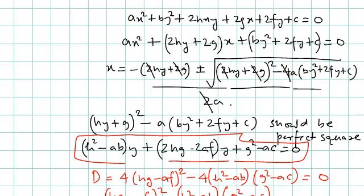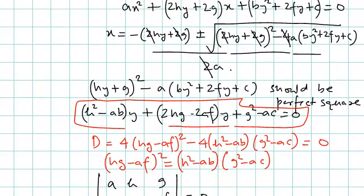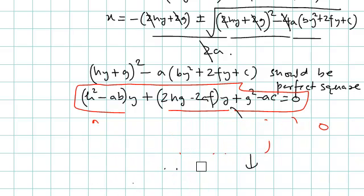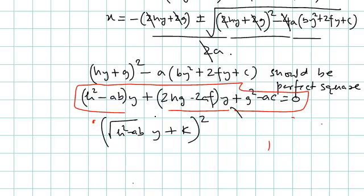Now, apart from that, let's see what the condition is for this pair of lines to represent parallel lines. For lines to be parallel, consider the perfect square form we discussed — it should be a perfect square form so that it can be a pair of lines. Suppose we express this perfect square form as: root of (h² minus ab) times y plus some constant, whole squared.